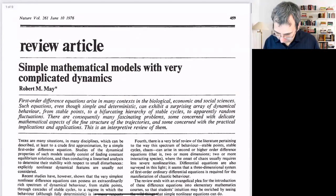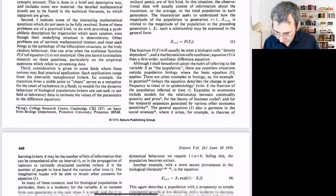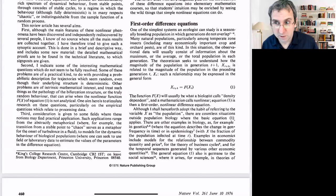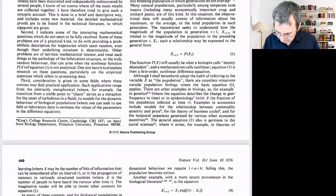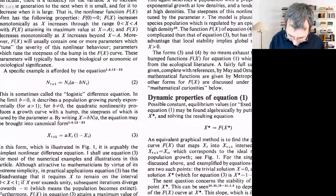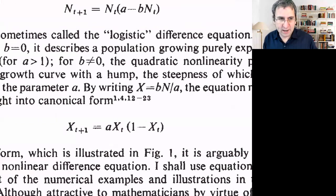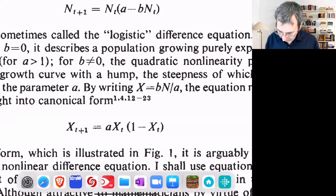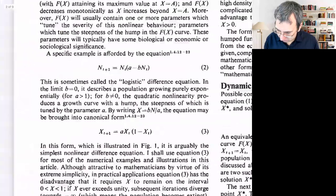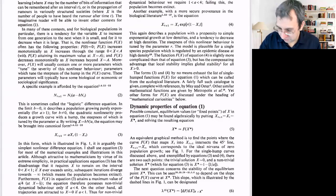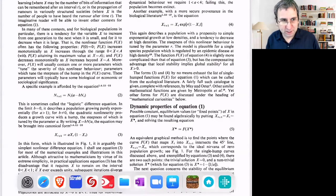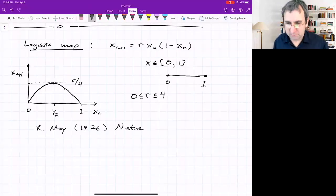It was first in a paper by Robert May, 1976, in Nature. It has an interesting name: Simple Mathematical Models with Very Complicated Dynamics. It's now become a classic. He talks about first order difference equations, also called iterated maps or recursion relations.